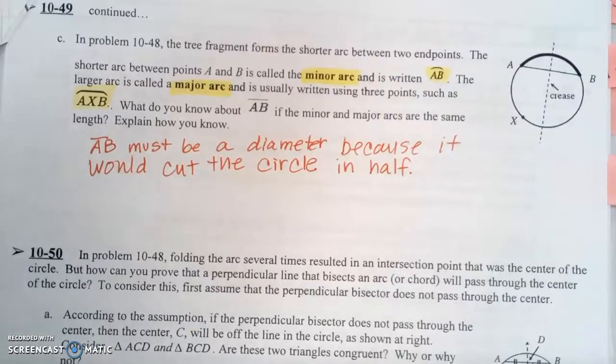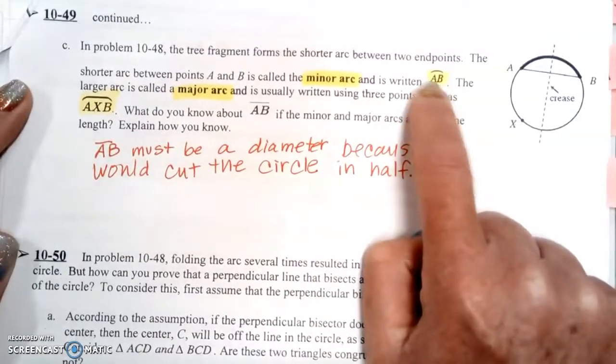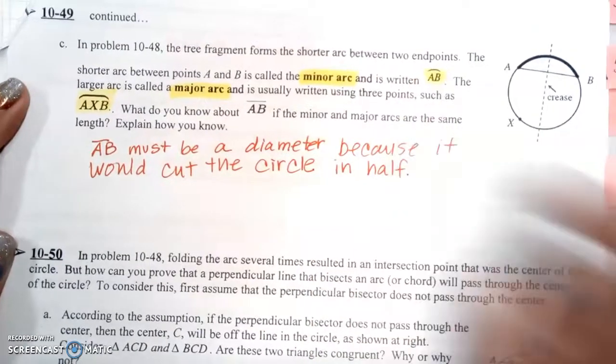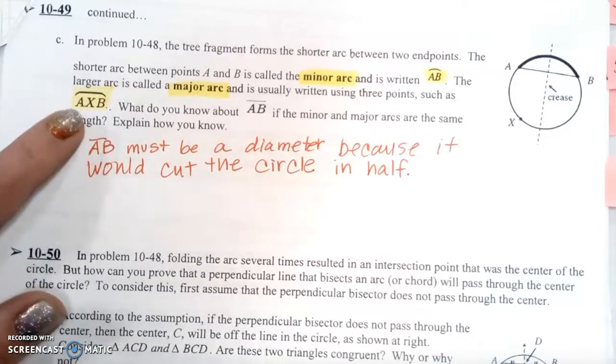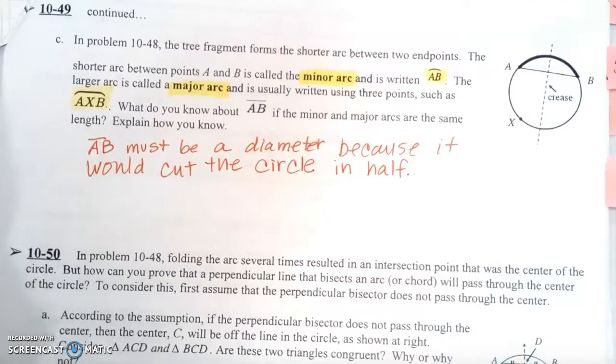Part C says in Problem 48 the tree fragment forms the shorter arc between two endpoints. The shorter arc between points A and B is called the minor arc and is written with two letters AB with a little arc over the top of them. The larger arc is called a major arc and is usually written using three points such as arc AXB. What do you know about segment AB if the minor and major arcs are the same length? Explain how you know.